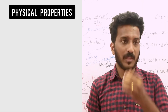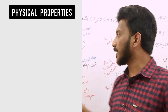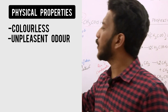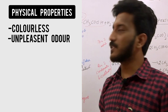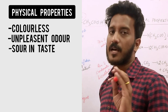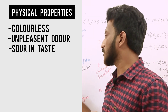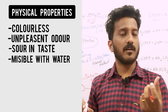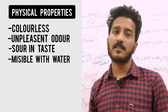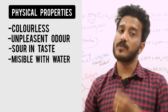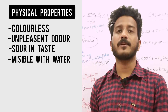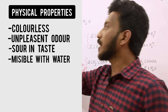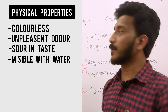Now, Physical Properties. Ethanoic Acid is colorless and has an unpleasant odor. It has a sour taste. It is completely miscible with water in all proportions — whether 10 ml, 100 ml, or 1000 ml of acid mixed with water, it mixes in all proportions.